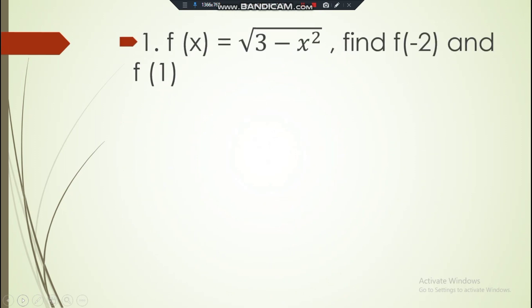Number 1: f(x) = √(3 - x²). Find f(-2) and f(1). So for this item number 1, you should have two answers.